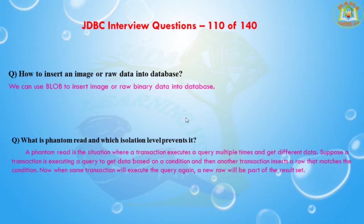The next question is: what is phantom read and which isolation level prevents it? A phantom read is a situation where a transaction executes a query multiple times and gets different data. Suppose a transaction is executing a query to get data based on a condition, and then another transaction inserts a row that matches that condition. Now when the same transaction executes the query again, the new row will be part of the result set — this new row is referred to as a phantom row, and this situation is termed a phantom read.